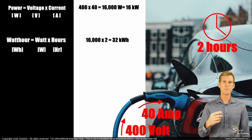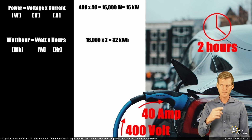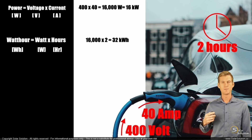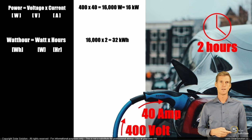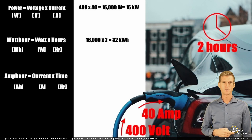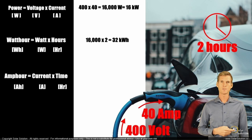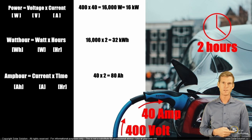Now let's calculate the total amount of electrical energy that we're putting into your battery through a different approach. Instead of using the watt hours, we're using the amp hours. The amp hours is the current times the time. So we're charging your vehicle with 40 amps for two hours. So the amp hour rate is 80 amp hours going into the battery of your vehicle.